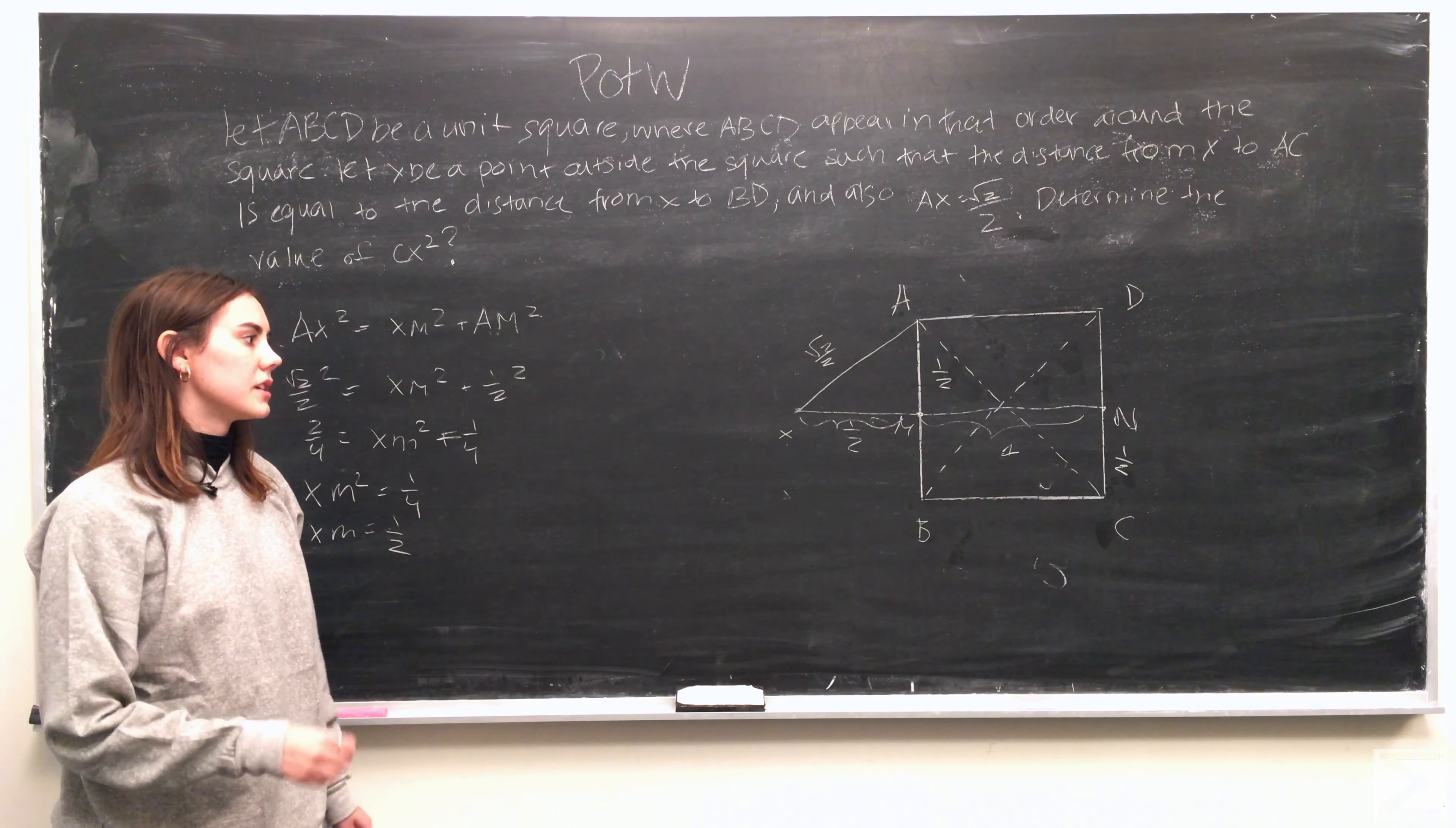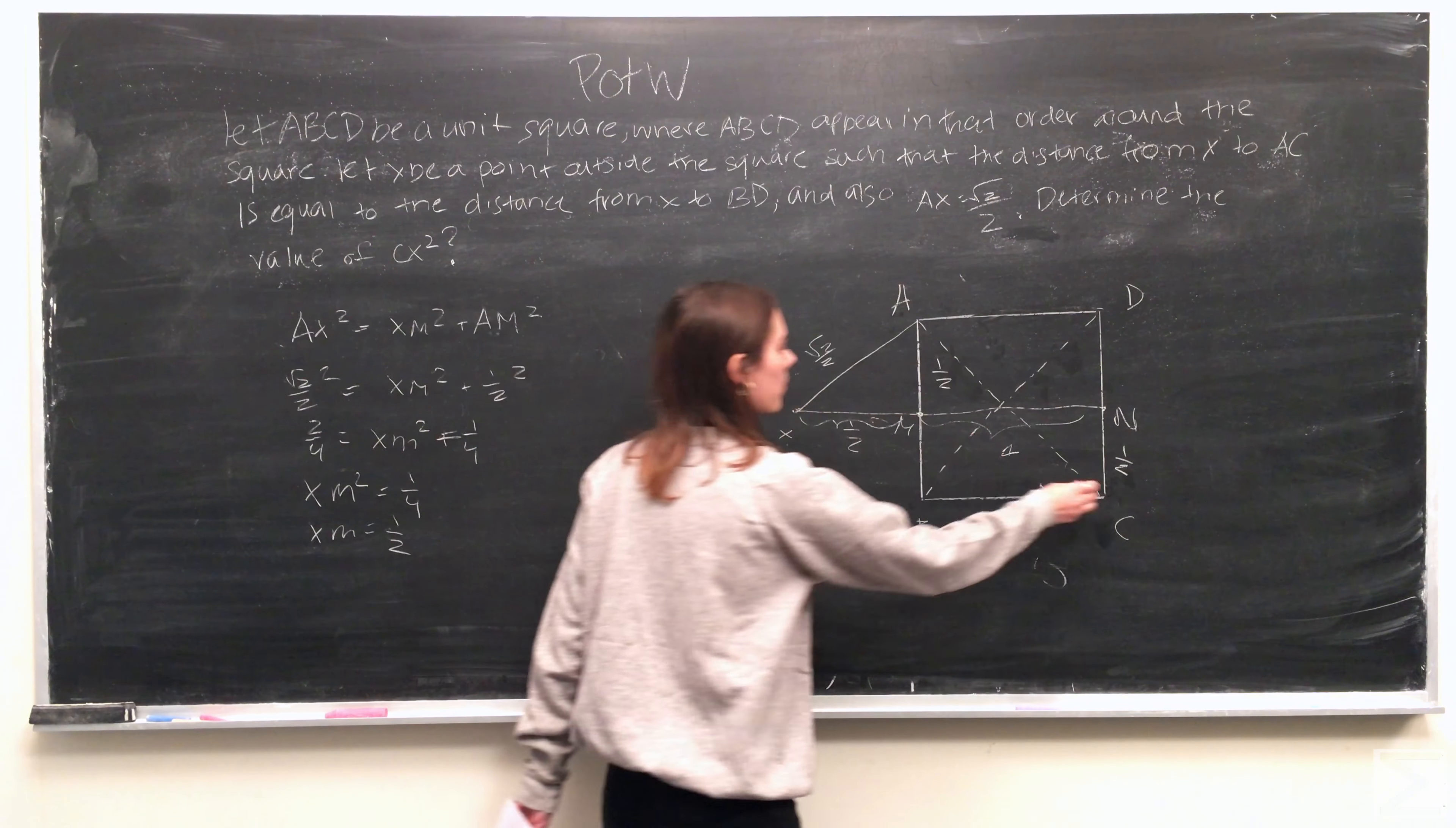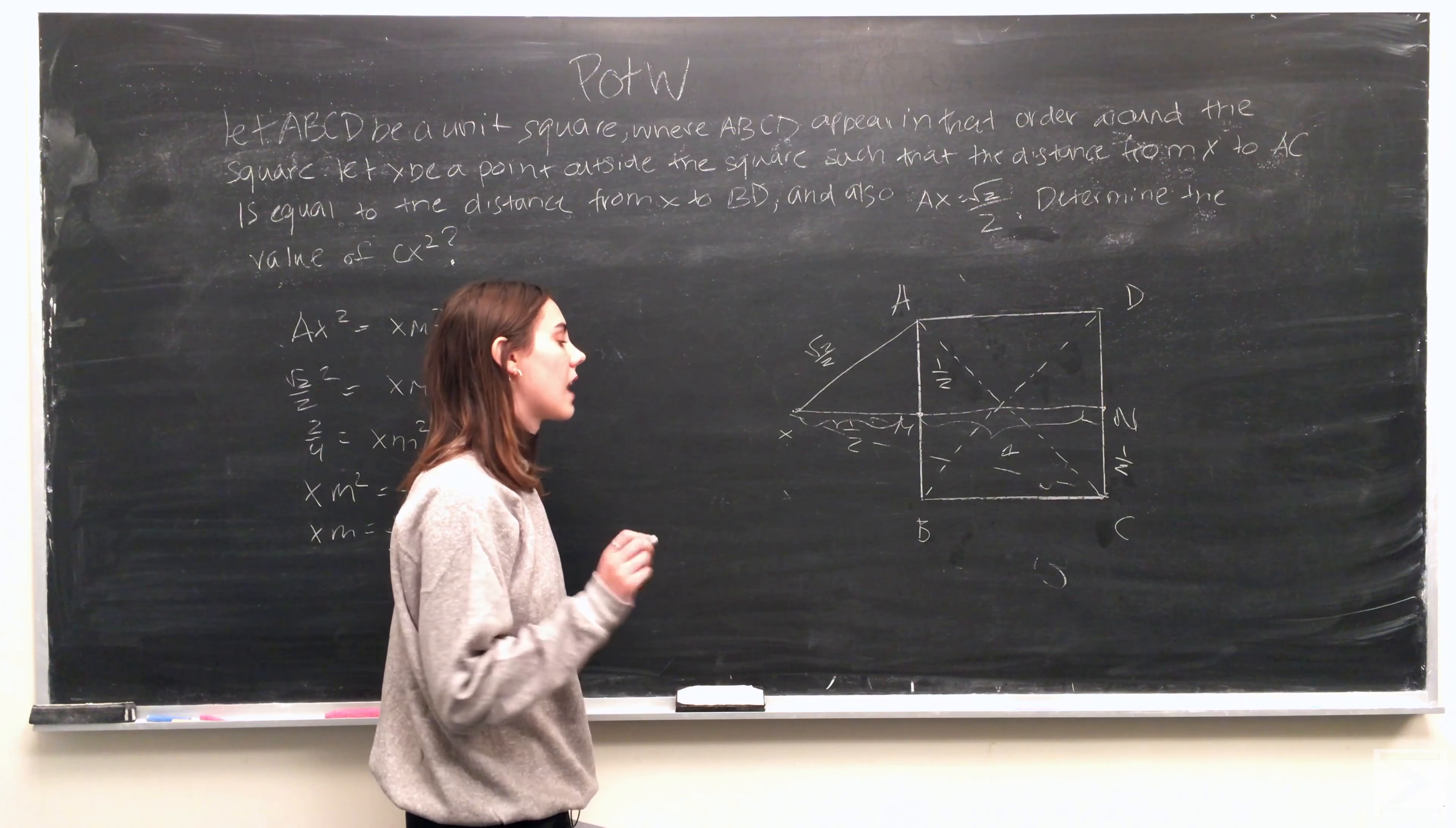Now that we know the distance of xn, what we can now do is drop a line from x to the point c, and we create a triangle with vertices at n, c, and x.